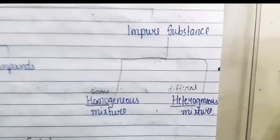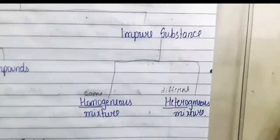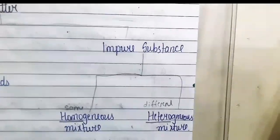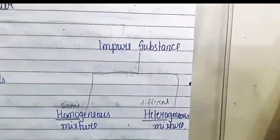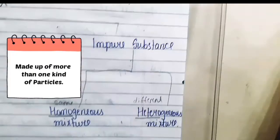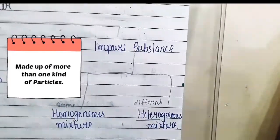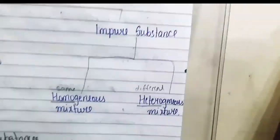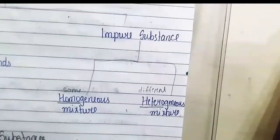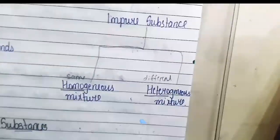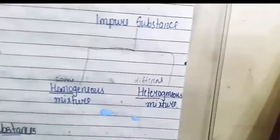Now let's talk about impure substance. Impure substance is a substance in which there are more than one type of atoms or molecules — made up of more than one kind of element. Impure substance is further divided into homogeneous and heterogeneous mixtures.